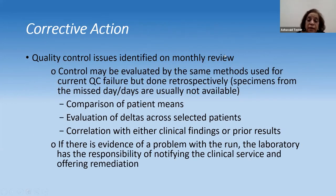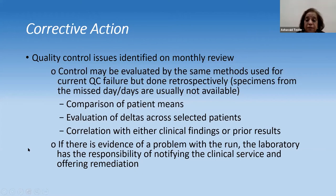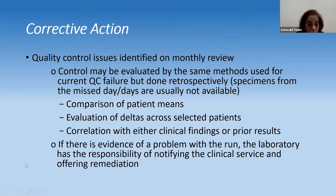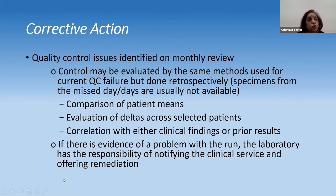A monthly review is important and must be done by leadership. Controls may be evaluated by the same method used for the current QC failure but done retrospectively — including comparison of patient means, evaluation of deltas, and correlation with clinical findings. If evidence of a problem with a run is found, the laboratory has the responsibility of notifying clinical services and offering remedy.